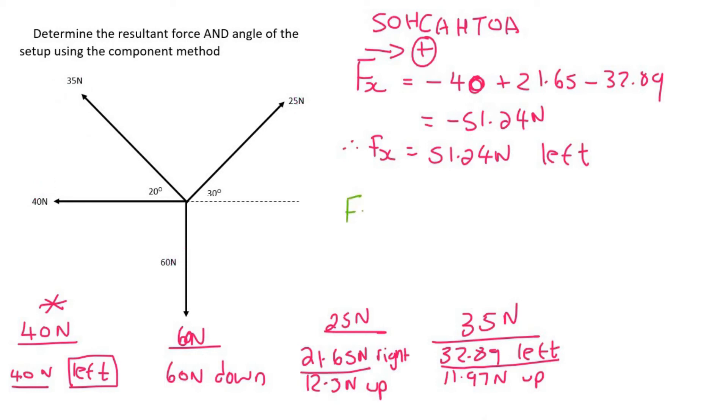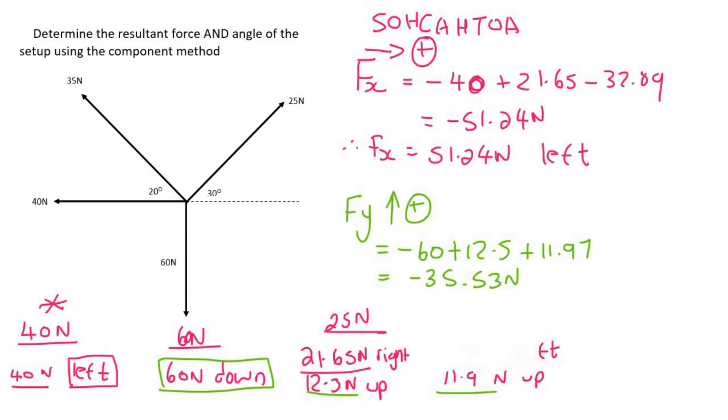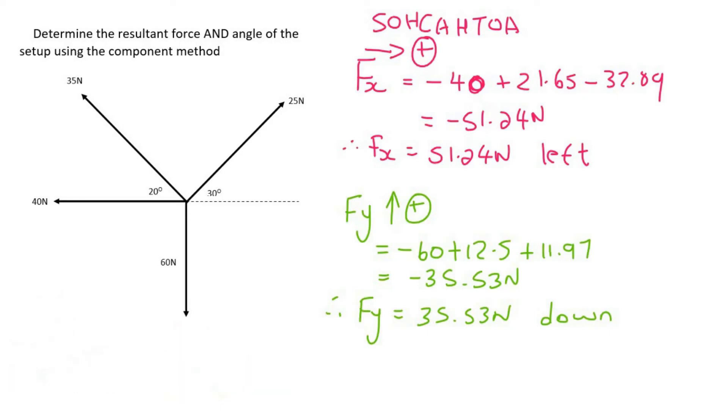Now we're going to do the y's. We're going to say Fy, and I'm going to choose upwards as positive. So that's going to be negative 60 for this one. And then this is up, which is 12.5. And then this is up, which is 11.97. And calculating this gives us negative 35.53 Newtons. Once again, that's a negative answer, so all that it means is that therefore the y component is going to be 35.53 Newtons, but we're going to rather say down, because we chose up as positive but we're getting a negative answer.